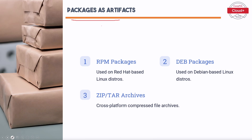Packages are another type of artifact used for distributing software. The common types are: RPM packages — used on Red Hat-based Linux distributions. DEB packages — used on Debian-based Linux distributions, including Ubuntu. Zip and tar archives — cross-platform compressed file archives that can be used on many operating systems, providing a flexible way to distribute software and resources.